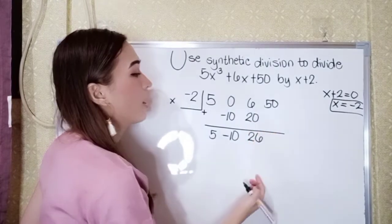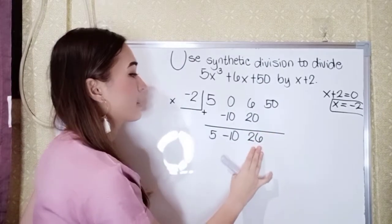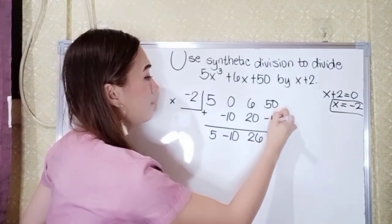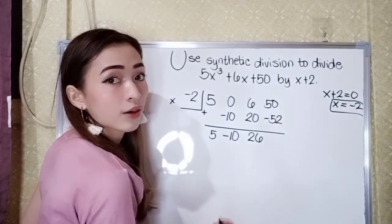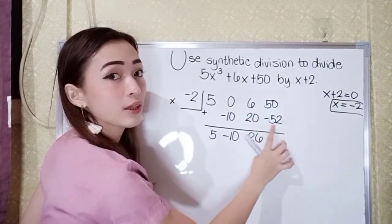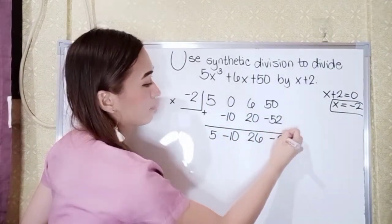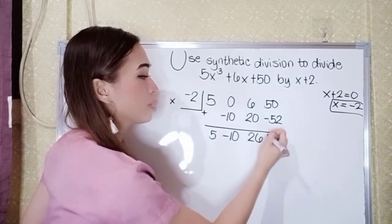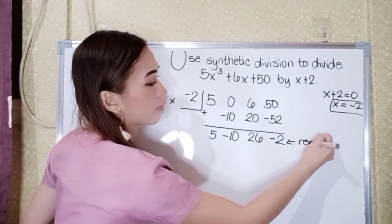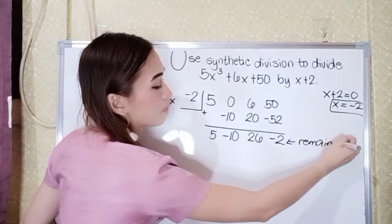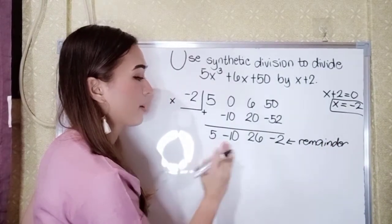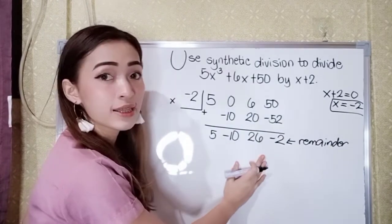Next, 26 times negative 2 is negative 52. Then 50 plus negative 52 is negative 2. This would be our remainder. Our quotient values are 5, negative 10, and 26.